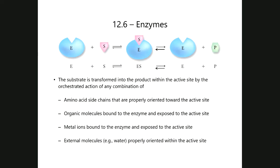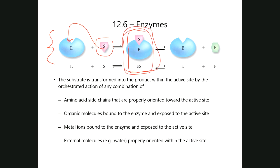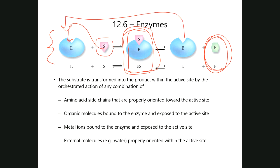To describe the process: initially the enzyme has nothing in its active site. The substrate either perfectly fits or is made to fit, forming the initial enzyme-substrate complex. This process is completely reversible — the substrate can go in and out. But once it's in there, it will progressively be transformed into product. Once the product is formed, it is released and the enzyme is regenerated, ready to start the process again.